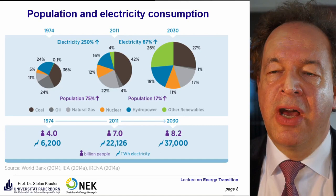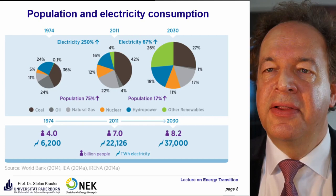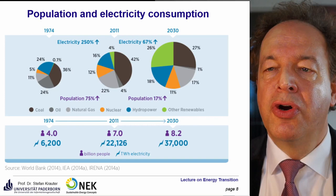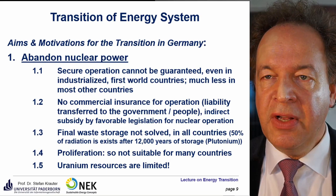We have to deal with an increasing population and increasing electricity consumption — the consumption is growing faster than population because we see a shift in energy use towards electricity. We will now discuss the aims and motivations for energy transition, particularly in Germany.